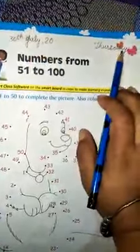So bitta open your math book page number 105. Then mention date and day. Today date is 30th July 2020 and day is Thursday.